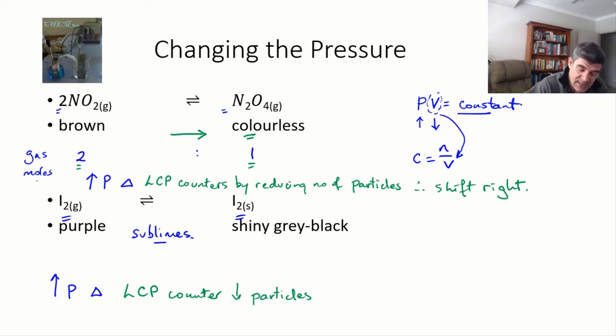In this case, if we look at the gas moles, we have one on the left-hand side, on the reactant side. We have zero on the right-hand side. Because iodine is a solid, that's the formation of the solid, there are no gas particles there.